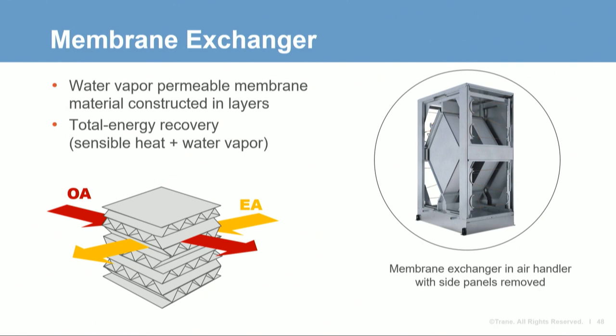A variation of the fixed plate heat exchanger is the membrane exchanger. Instead of aluminum plates, a vapor-permeable membrane can be used to exchange both sensible heat and water vapor. Like aluminum plates, the airflows are cross-flow and sensible heat is exchanged. However, in addition to heat transfer, water vapor is transferred between airstreams through the membrane via permeation — water vapor permeates to the airstream of lower water vapor pressure.